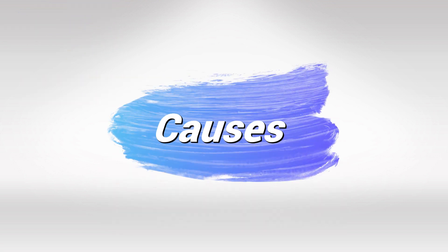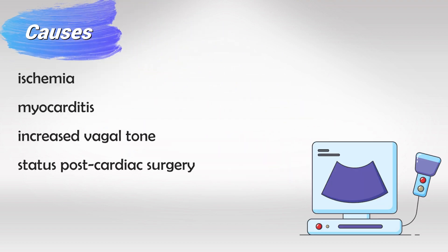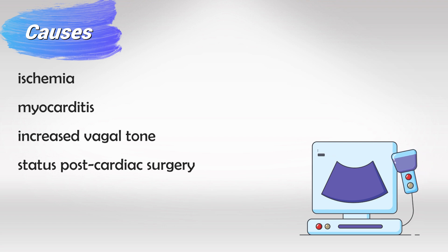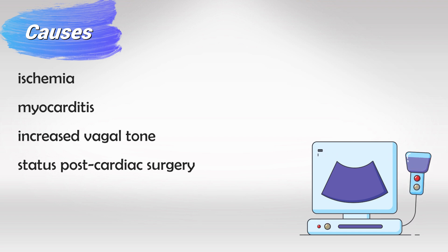Remember, anything that is unique to one specific condition is very high yield. To know the causes, think of anything that would damage the electrical pathway of the heart — so ischemia, myocarditis, increased vagal tone in some patients, or of course cardiac surgery. All of these conditions have the potential to affect the pathway of the electrical current.